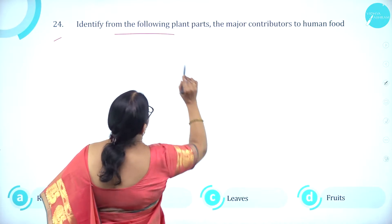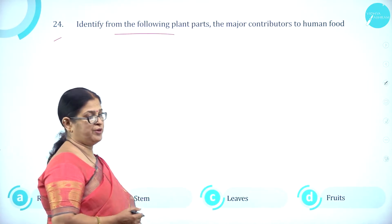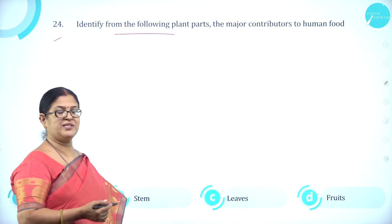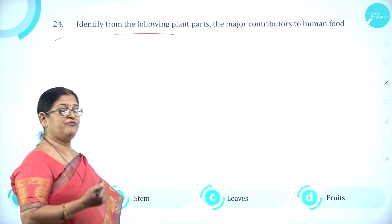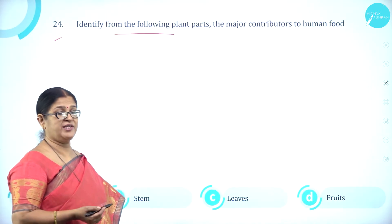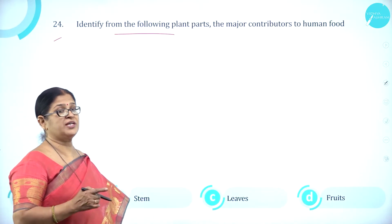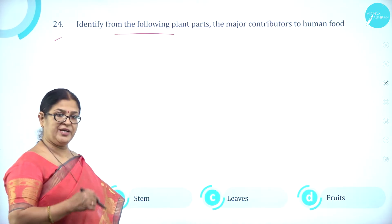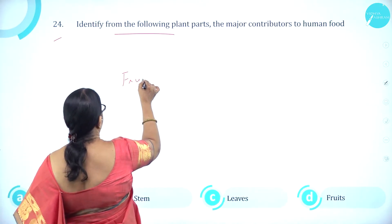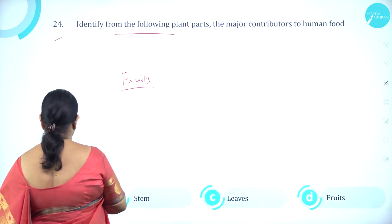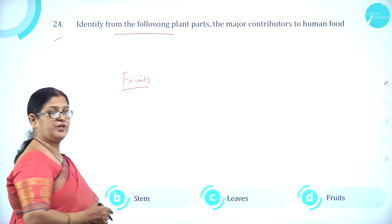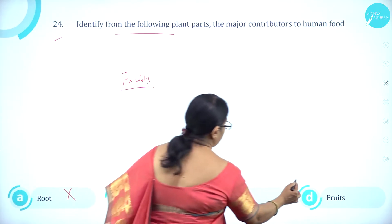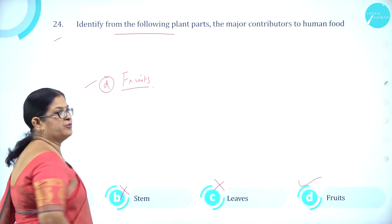Question number 24. Identify from the following plant parts the major contributors to human food. Option A root, B stem, C leaves, and D fruits. We use modified roots, modified stems, and leaves like greens as sources of food. But fruits are the major plant parts most widely used in human food. So option D fruits is correct.